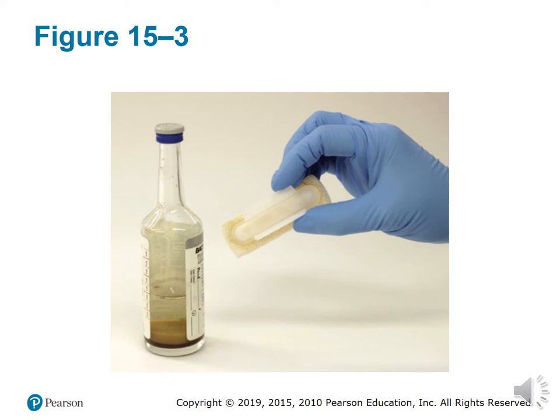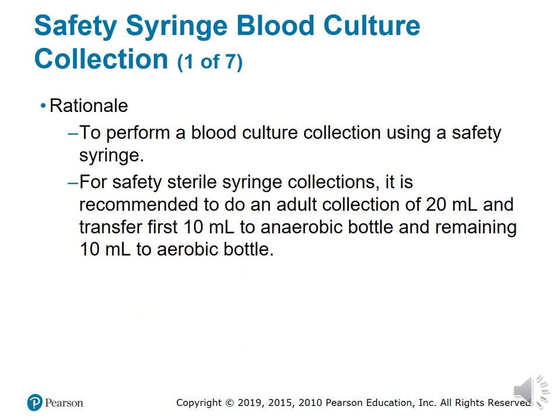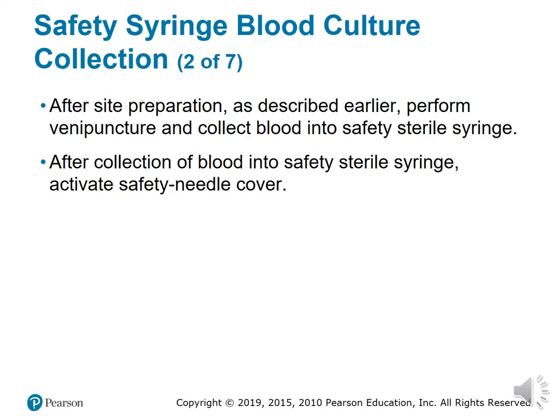For safety syringe blood culture collection, it is recommended to collect 20 milliliters for an adult and transfer the first 10 milliliters to the anaerobic bottle and the remaining 10 milliliters to the aerobic bottle. After site preparation, perform venipuncture and collect blood into a sterile safety syringe.